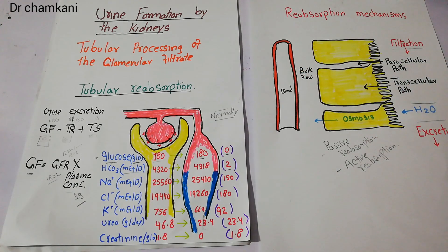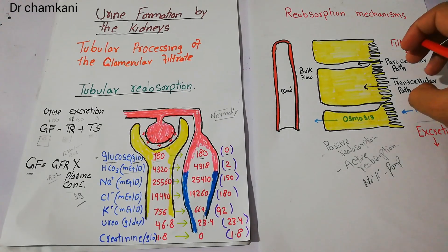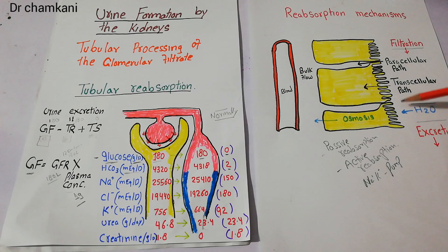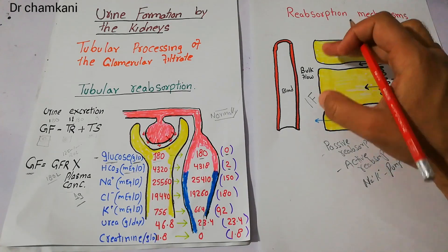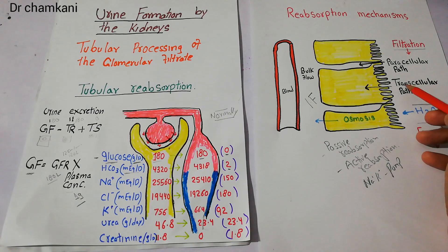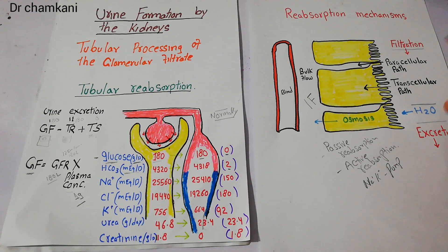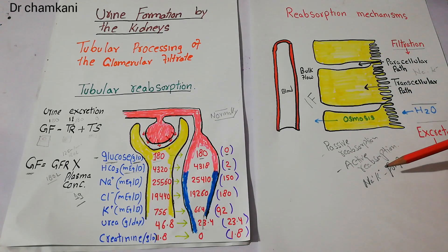In active reabsorption, energy is used — for example, by the sodium-potassium pump. Some substances are actively reabsorbed from the tubular lumen into the peritubular capillaries. When these substances enter from the tubular lumen into the tubular cells and interstitial fluid, they may move through the cell membrane via the transcellular path, or they may move through the paracellular path. So the mechanisms may be passive or active reabsorption, and the paths may be paracellular or transcellular.